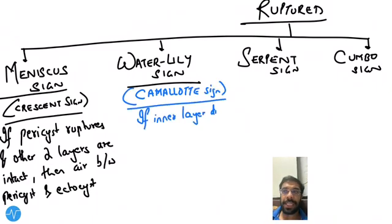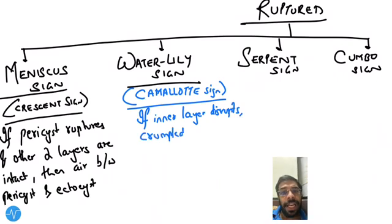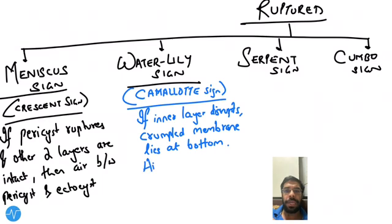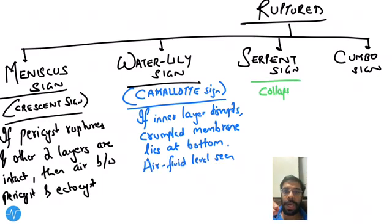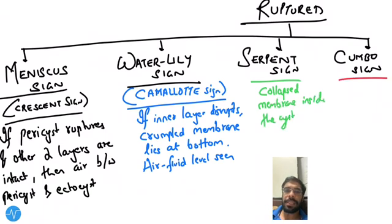The Water Lily sign, also known as the Camelot sign, occurs when the inner layer ruptures. That inner layer crumbles down and an air-fluid level is seen with a small bump above it, giving the appearance of a water lily.